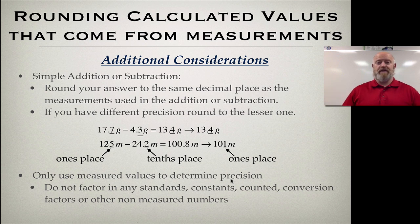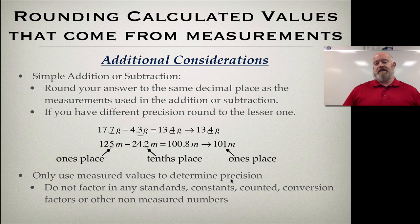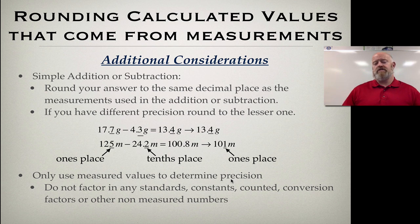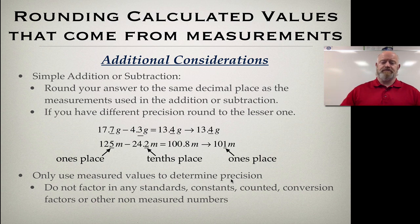Counted values — like 10 people in a room — don't factor into precision. Conversion factors, such as grams to milligrams or liters to milliliters, are exact equalities and are not measured, so we don't count those either. Things like small amounts of money are also not measured — you count out dollars and cents. The only exception would be millions of dollars not being counted bill by bill, but that's outside the scope of this class.